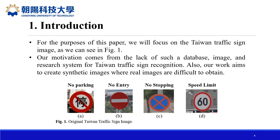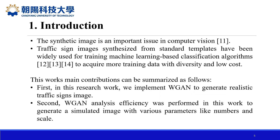For the purpose of this paper, we focus on Taiwan traffic sign images as shown in figure 1. This is the original Taiwan traffic sign image containing no parking, no entry, no stopping, and speed limit signs. Our motivation comes from the lack of a database, images, and research system for Taiwan traffic sign recognition. Our work aims to create synthetic images where real images are difficult to obtain. Synthetic images are an important issue in computer vision, and traffic sign images synthesized from standard templates have been widely used for training machine learning-based classification algorithms to acquire more training data with diversity and low cost.